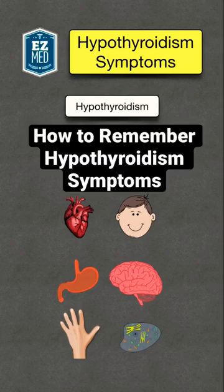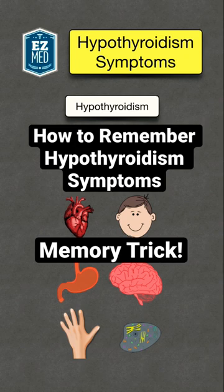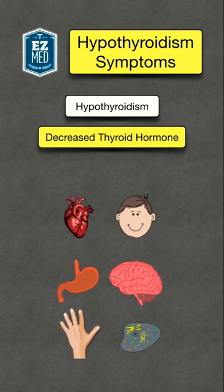In the previous video, you learned an easy way to remember hyperthyroidism, so now let's look at the symptoms of hypothyroidism. Hypothyroidism occurs when there is decreased levels of thyroid hormone in the blood. You can take the prefix hypo and think of slow, so for hypothyroidism we're going to see symptoms of slowing things down.